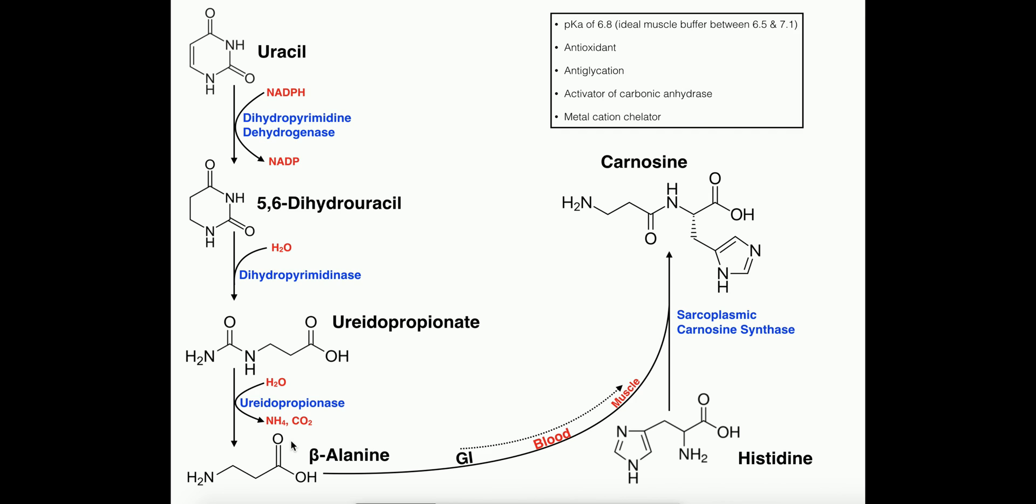We also went over this biosynthetic pathway, and hopefully it makes sense how the liver can make beta-alanine, how we can get it as a supplement, and ultimately how it ends up through the blood into the muscle where it will be packaged with histidine into carnosine by the enzyme carnosine synthase. Hopefully this video made sense to you. Please make sure to like this video and subscribe to my channel for future videos and notifications. Thank you very much.